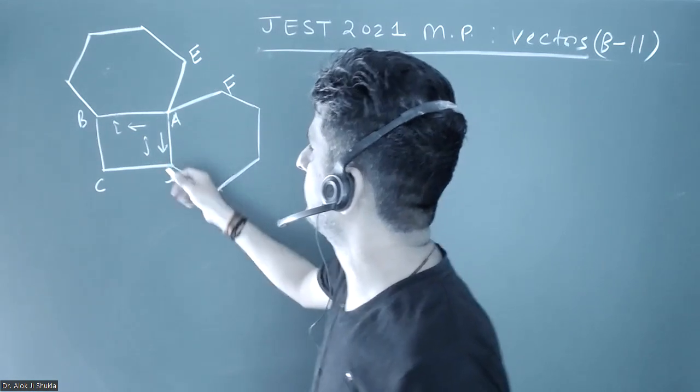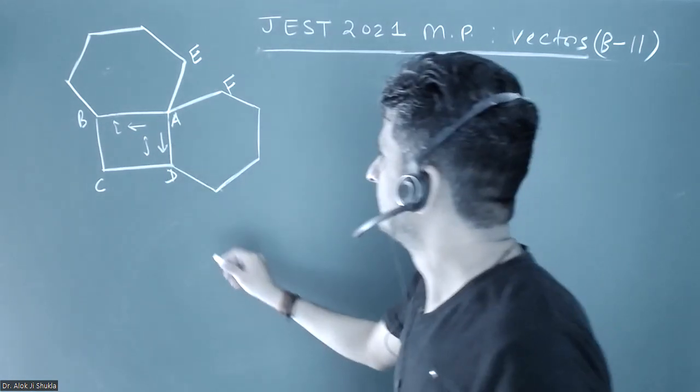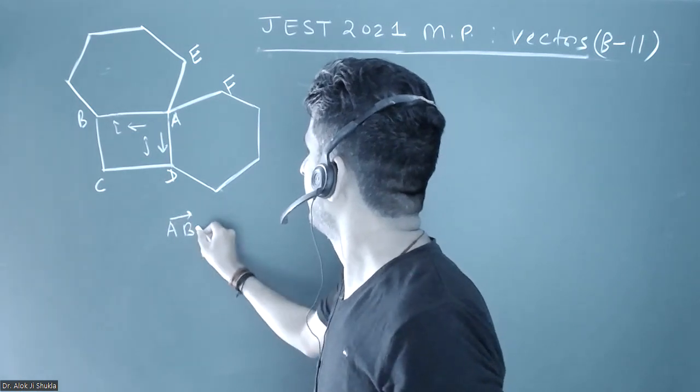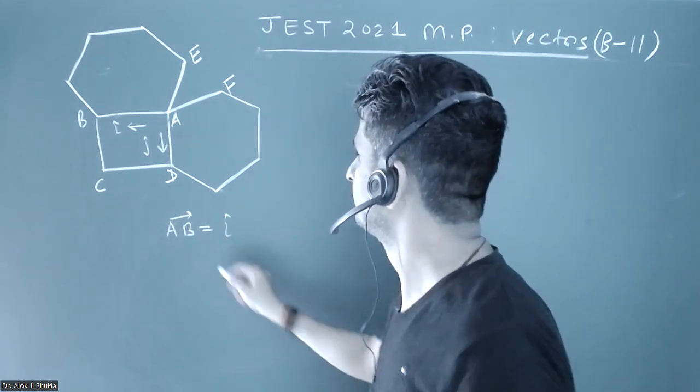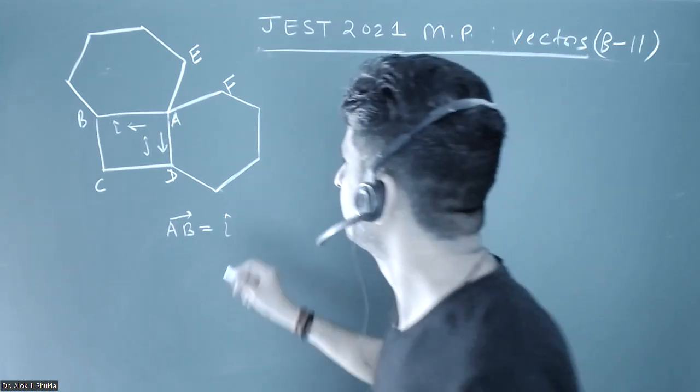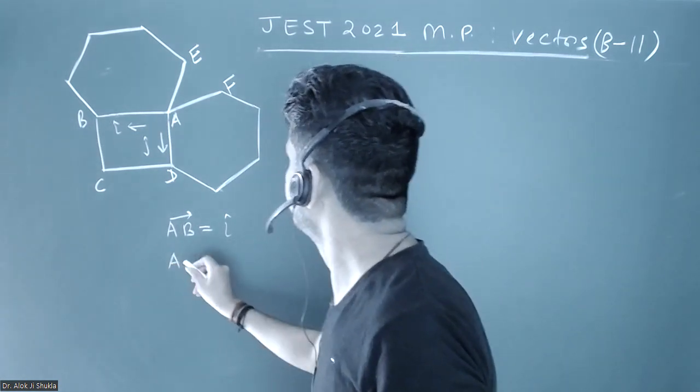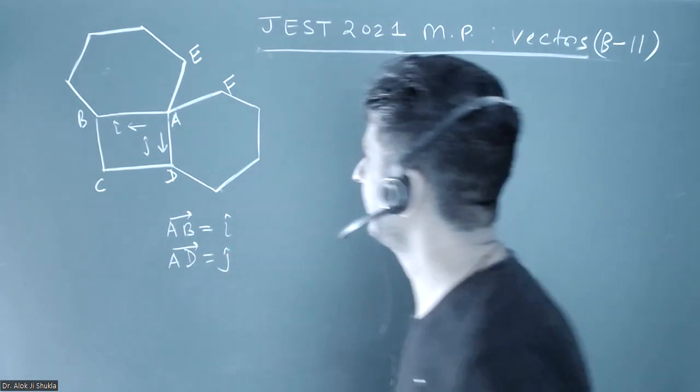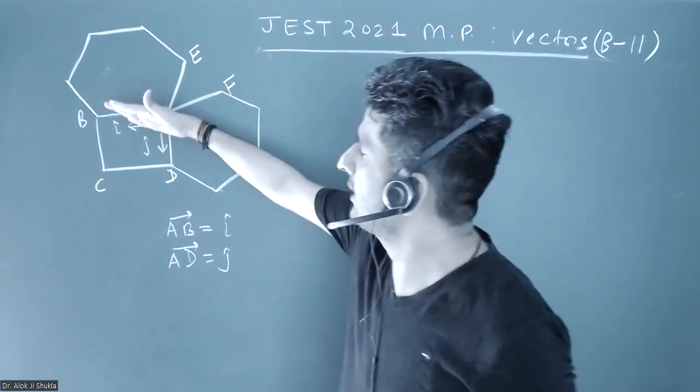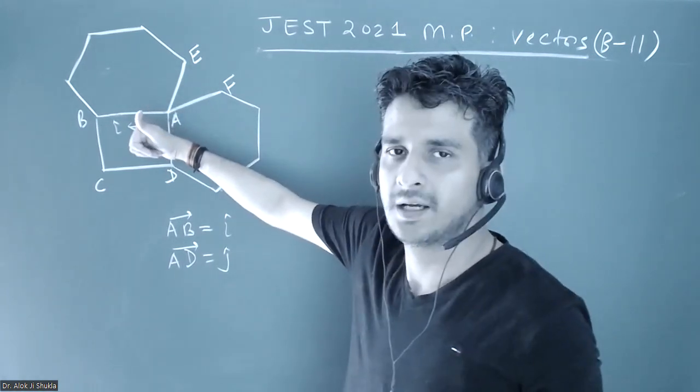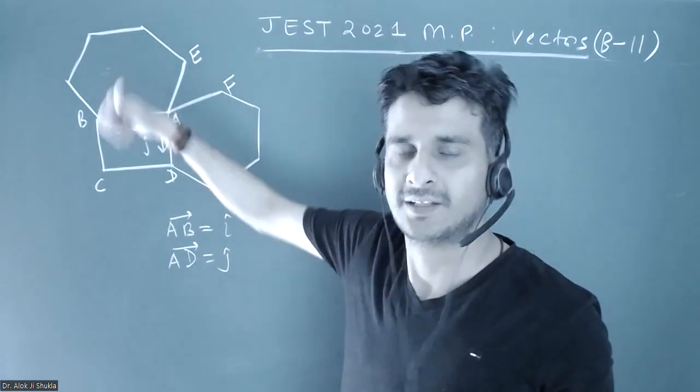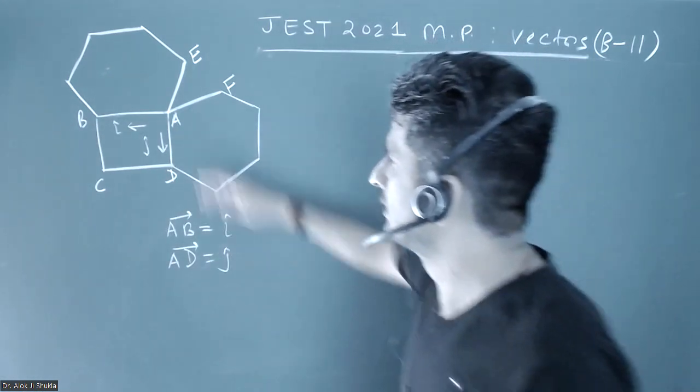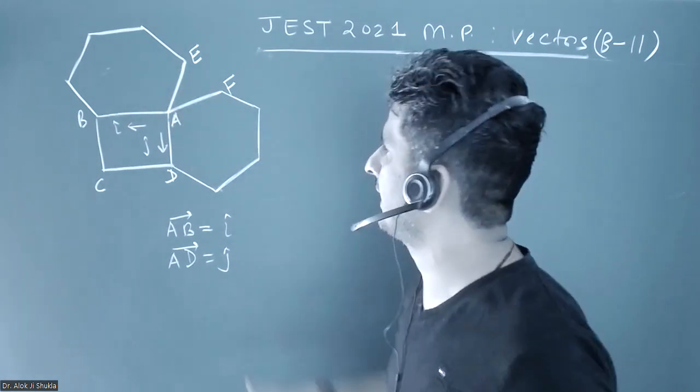Let me take this length as unity, so vector AB is just i cap with magnitude equal to one, and vector AD is also a unit vector j cap. If I do i cross j, I will get k cap, so our Cartesian system is followed.